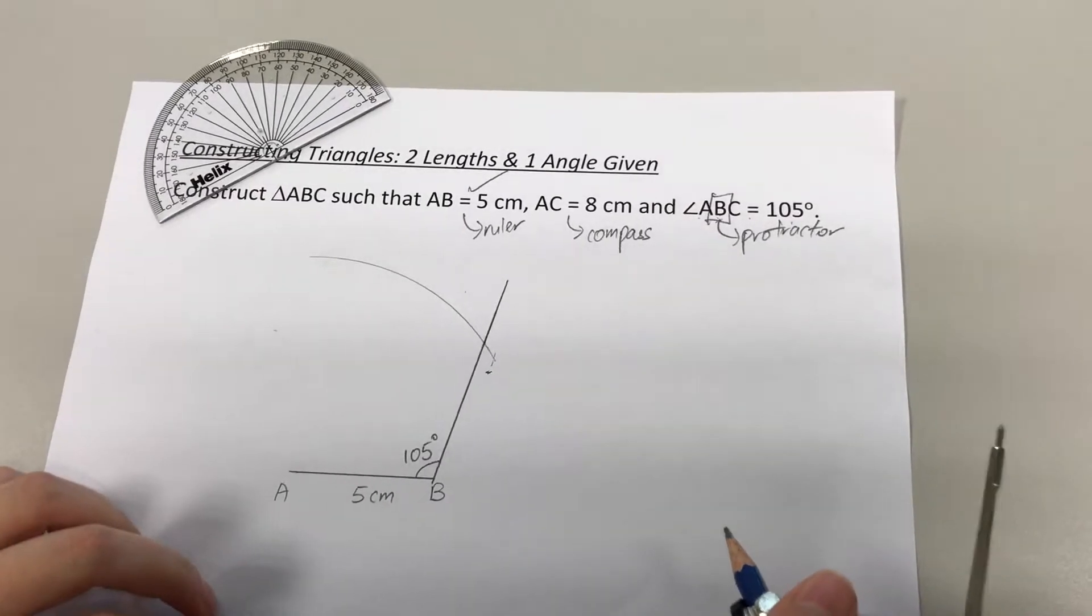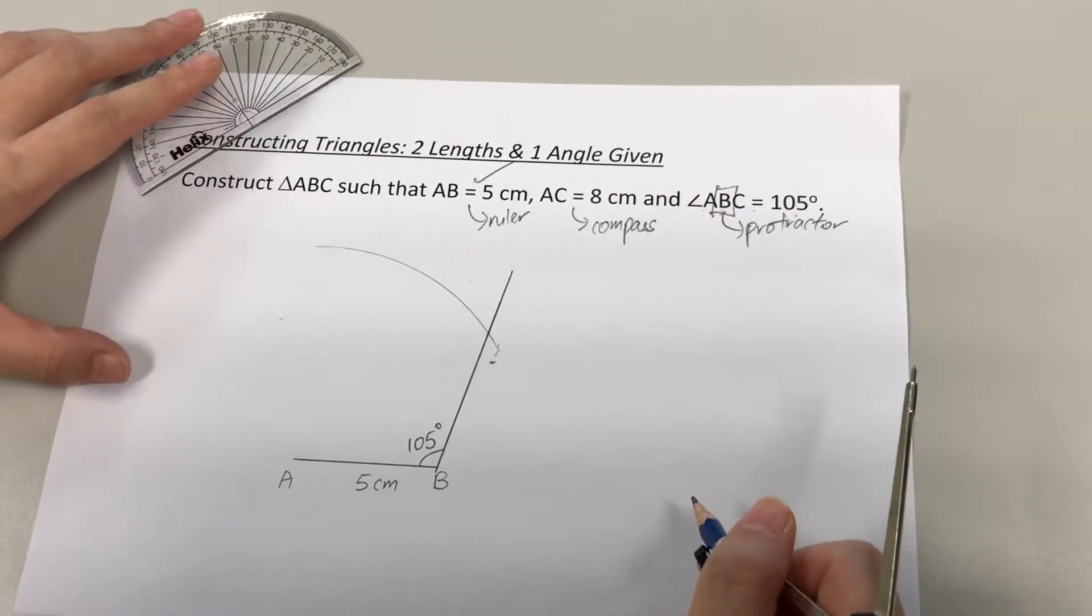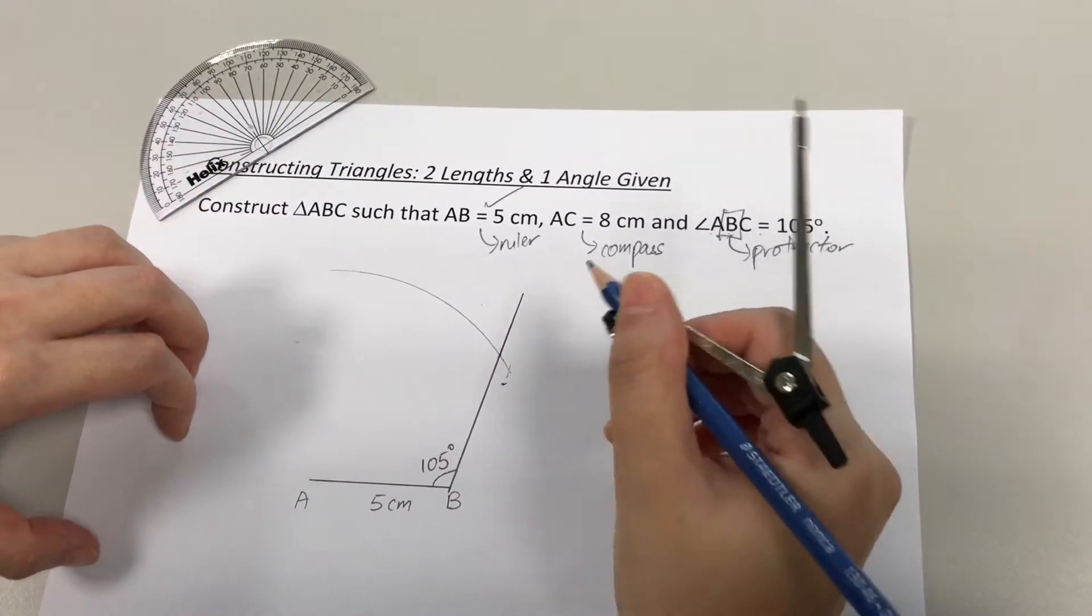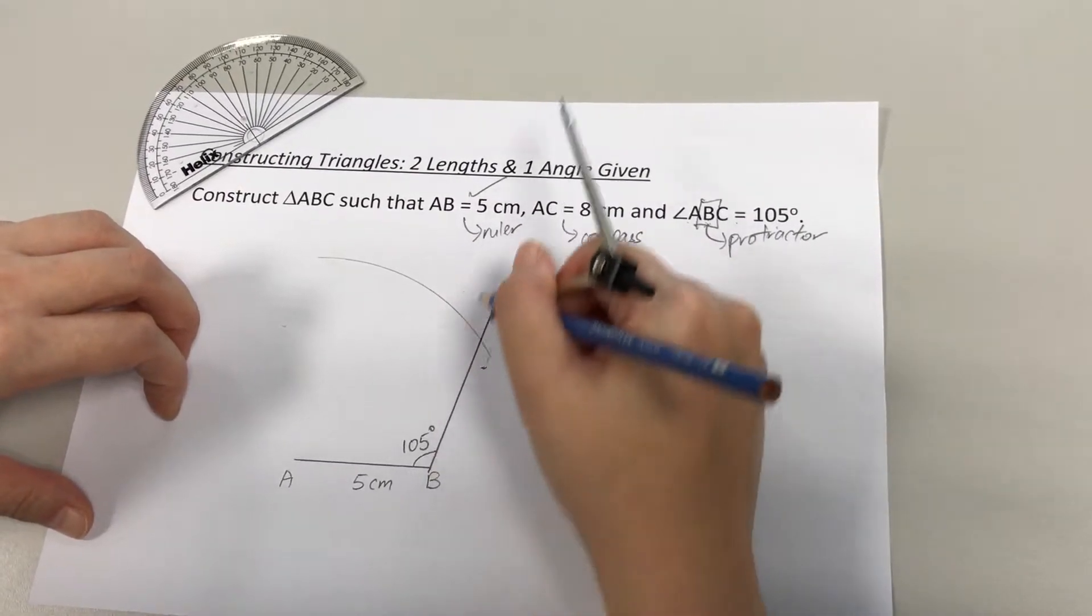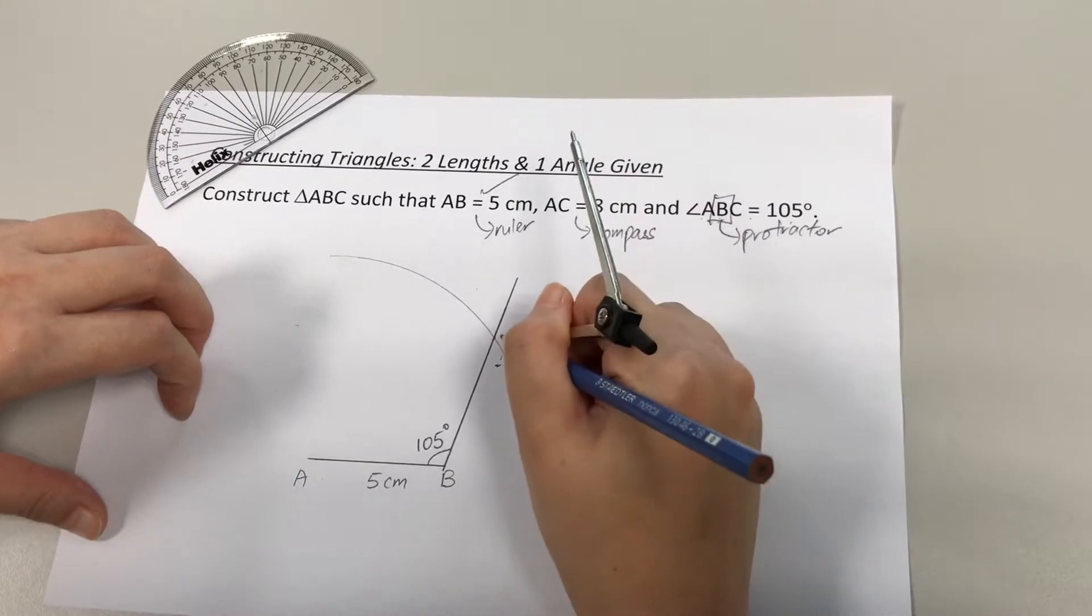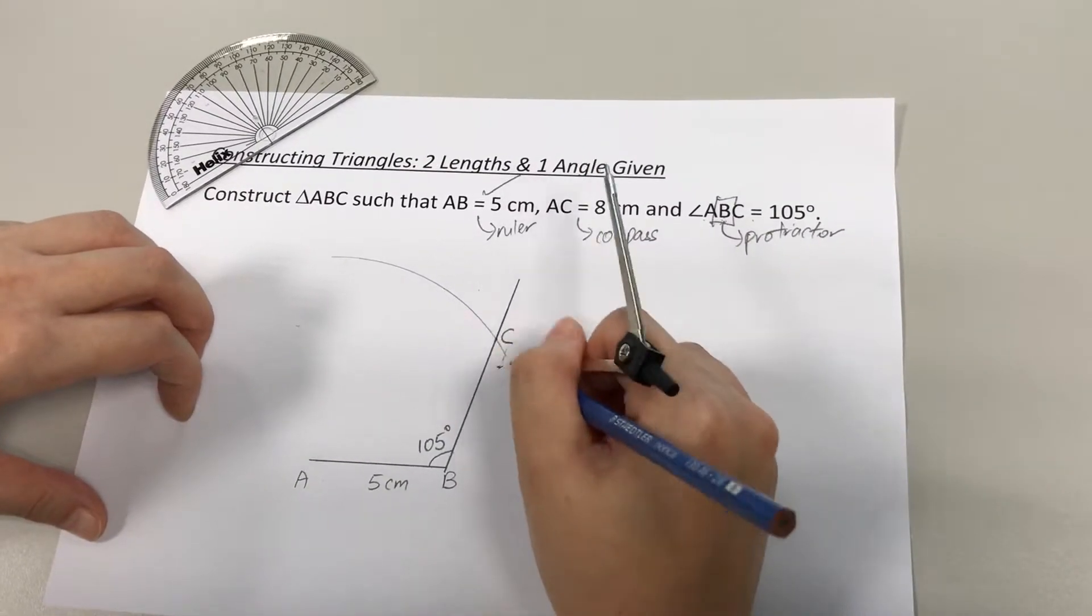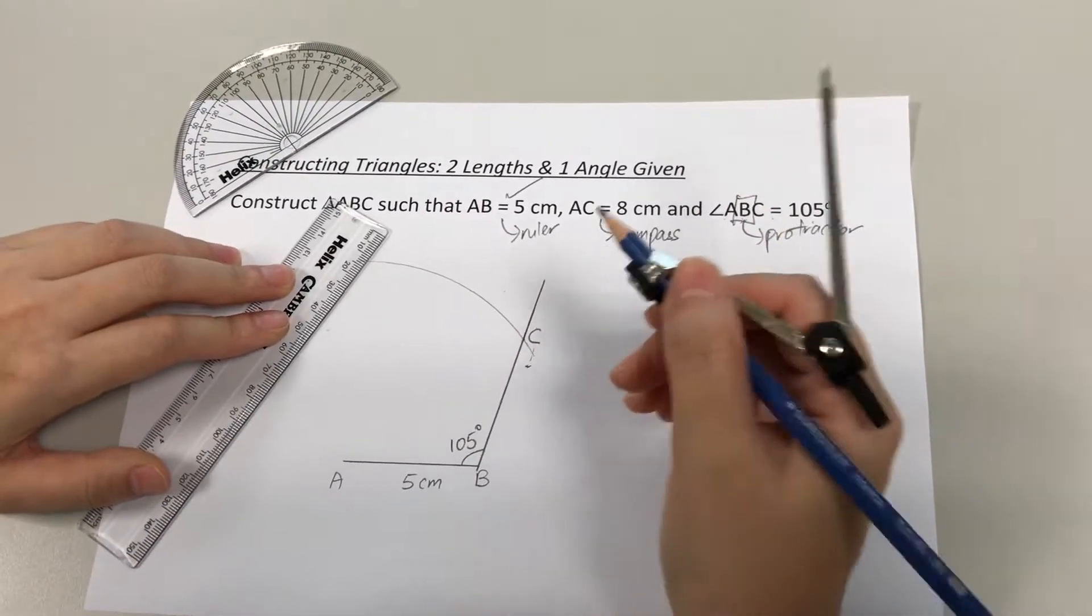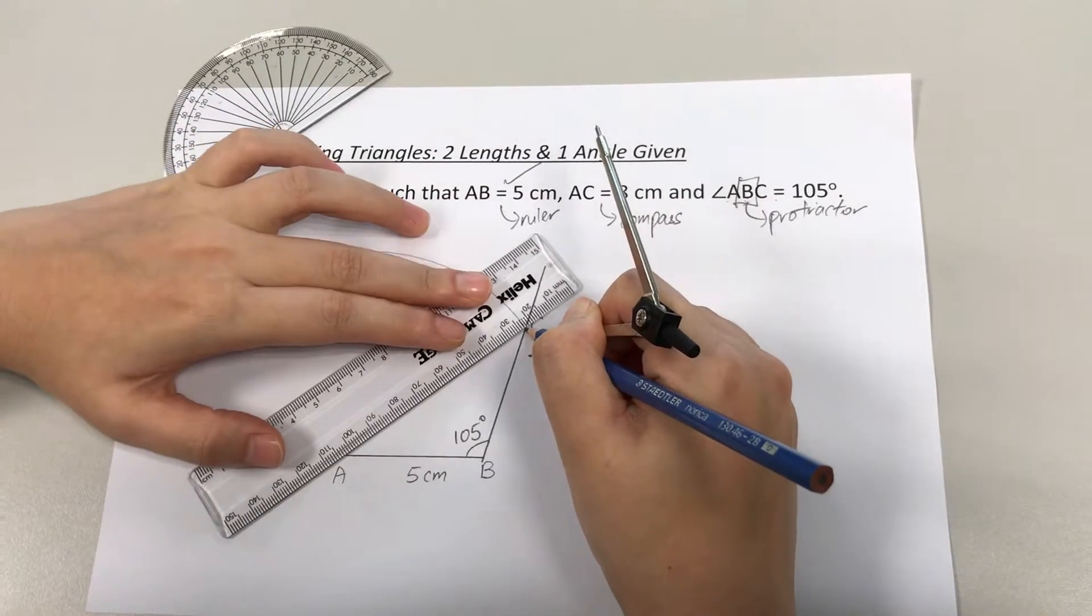Now I have to locate where point C is so that I can complete my triangle. To locate a point in your shape, it is always where the two lines meet. Where this 105 degrees line meets this curve at this point here, that is where point C will be at. So you have to locate point C accurately, and the last step is to complete your triangle by joining point C to point A with your ruler.